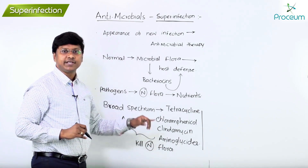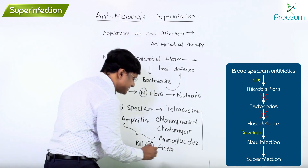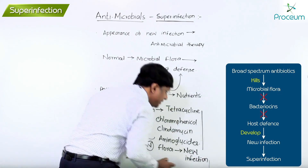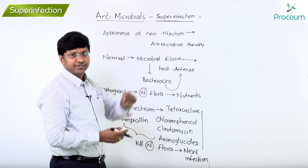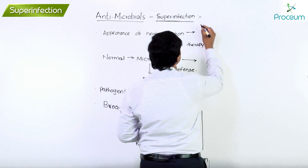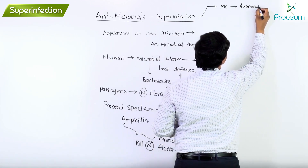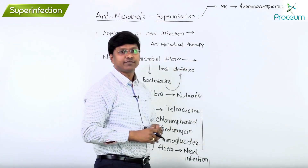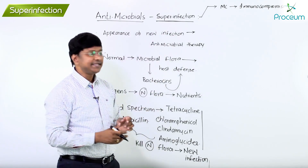When these antibiotics kill the normal flora, there is no bacteriocin, there is no host defense, and thereby there is development of a new infection called superinfection. Superinfection is more commonly seen in immunocompromised patients.